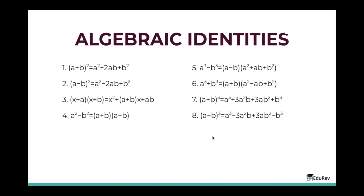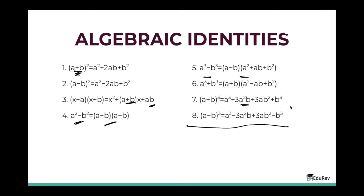Let's see some algebraic identities that can help us solve many questions and save time. These are: (a + b)² = a² + 2ab + b²; (a − b)² = a² − 2ab + b²; (x + a)(x + b) = x² + (a + b)x + ab; a² − b² = (a + b)(a − b); a³ − b³ = (a − b)(a² + ab + b²); a³ + b³ = (a + b)(a² − ab + b²); (a + b)³ = a³ + 3a²b + 3ab² + b³; and (a − b)³ = a³ − 3a²b + 3ab² − b³.